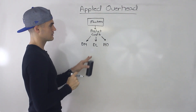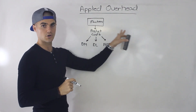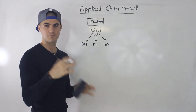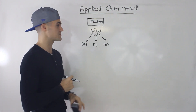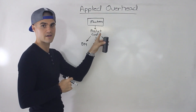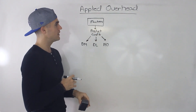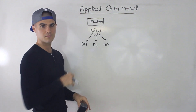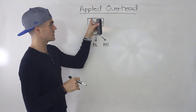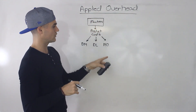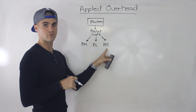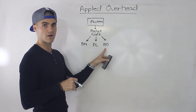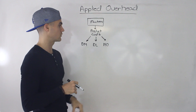There are also period costs, which are non-manufacturing costs like selling costs, admin, and any general expenses not incurred in the factory. But in this video I'm going to ignore the period costs because when we're talking about applied overhead, we're talking about applied manufacturing overhead, so we're going to be focusing on product costs.